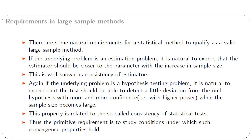If the underlying problem is a hypothesis testing problem, it is natural to expect that the test should be able to detect a small deviation from the null hypothesis with more and more confidence. In statistical terms, this means we should detect a small deviation from the null hypothesis with higher power. When sample size becomes large, this property is related to the consistency of statistical tests. Thus, the primitive requirement is to study conditions under which such convergence properties hold.